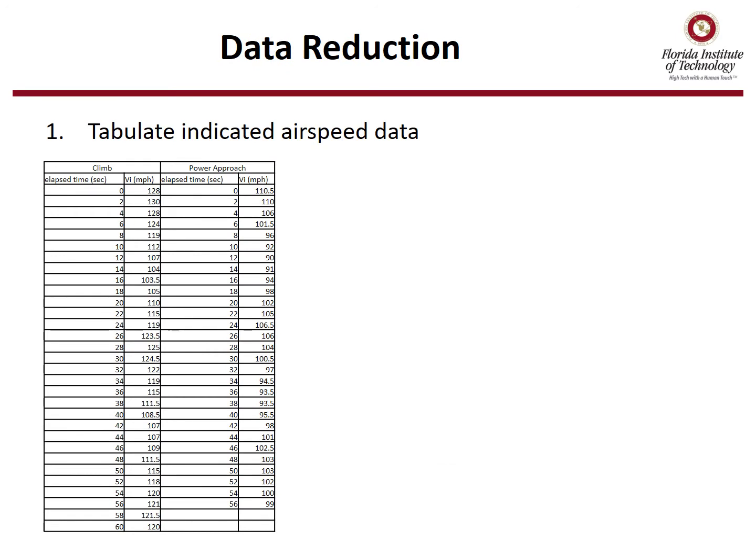Step one is to tabulate your indicated airspeed data. You should have done two FUGOI demonstrations, one in the climb configuration and one in the power approach configuration. Depending whether you took data every five seconds, ten seconds, or used your phone to record video, which is what we did for this data shown here, and then went back and played the video and recorded the data every two seconds, you'll have a table of data of time versus indicated airspeed.